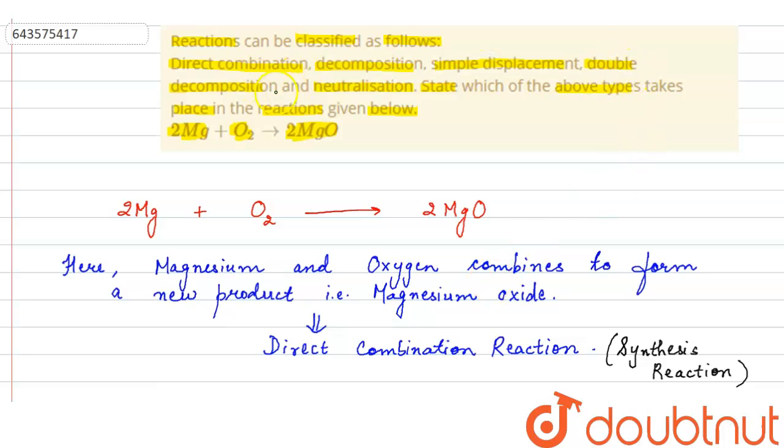Then, we have double decomposition. In double decomposition, two compounds exchange their ions. We have here two compounds but they are not exchanging ions as there are no ions present. So, it is also not a double decomposition reaction.